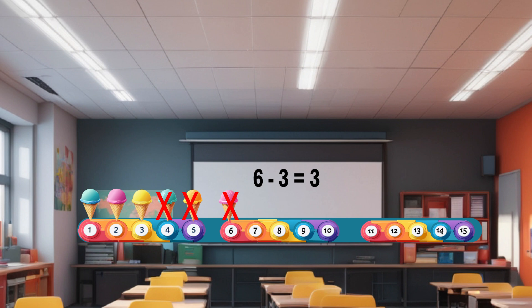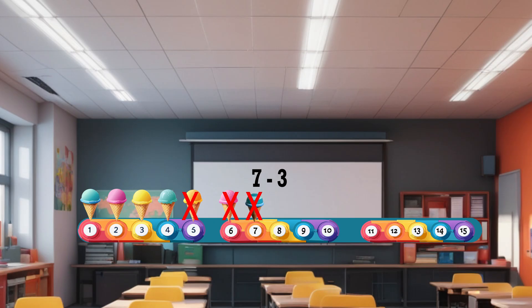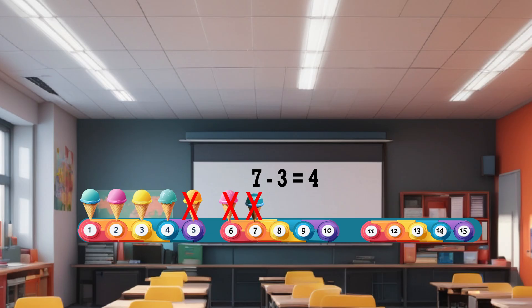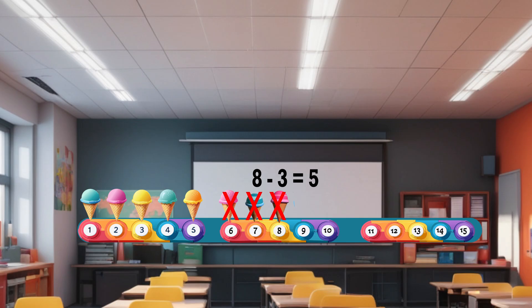Six minus three equals three. Seven minus three equals four. Eight minus three equals five.